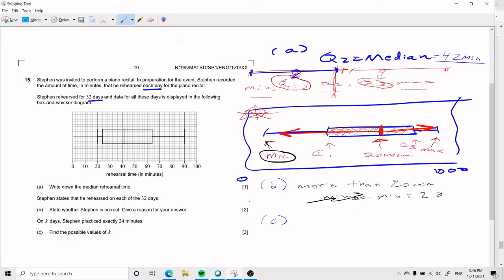Now, for part C, which is the hard part for sure, we have that on K days, Stephen practiced exactly 24 minutes. And we need to find the possible values of K. The reason it's possible values, even though it's asking for exactly, is that we don't have the data sets. What we have in the box and whisker diagram is the representation of the data sets. We have the minimum and the maximum, but we don't know how many minimums there were or how many maximums there were. We just know that this could be one or many of the minimums, you know what I mean? And so, the median could be one of the many 42 minutes that existed in the data sets. That's why it's asking for possible values and not exactly. If you had literally the data set in front of you, you could find the exact values, but in the box and whisker diagram, it's not quite like that.